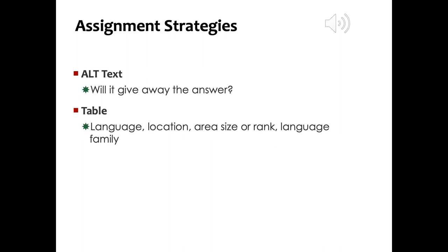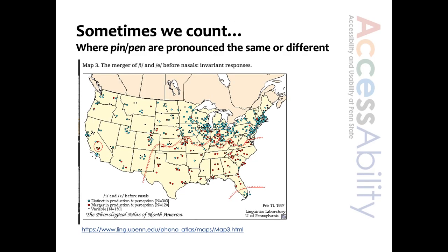This map shows differences in pronunciation of the words 'pen' (P-E-N) and 'pin' (P-I-N) within the US. Different colored dots indicate whether the speaker rhymes or doesn't rhyme these words. I'm including this to show what happens when the original creator of the map provides only an image. If an assignment were to ask to explain the distribution of where in the US the words pen and pin rhyme or don't rhyme, an alt doc team might need to spend time counting the different colored dots in each state.